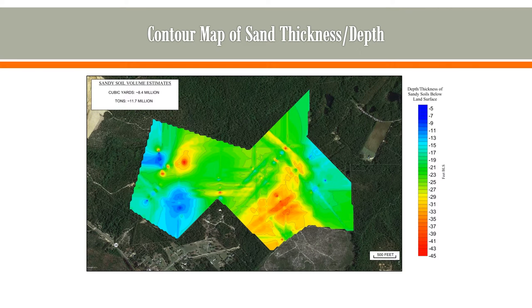Ultimately, we took the results from the 12 transects and generated these contour maps. What we're looking at here is basically the thickness of the sandy soils, or the depth of the bottom of that sand unit across the property. We used the program Surfer to make these maps and also to generate some very general estimates of sand volumes at the site.